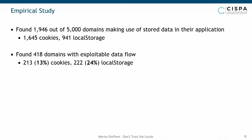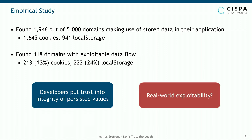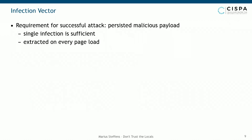This leaves us with the impression that developers put trust in the integrity of whatever is stored inside the user's browser — they think that whatever they've written there stays there and isn't controllable by an attacker. We have assumed a strong attacker model: these 418 domains are susceptible if an attacker is actually capable of injecting a storage entry inside the victim's browser. We also wanted to investigate how normal attacker models could tamper with these storages, leading us to two infection vectors.